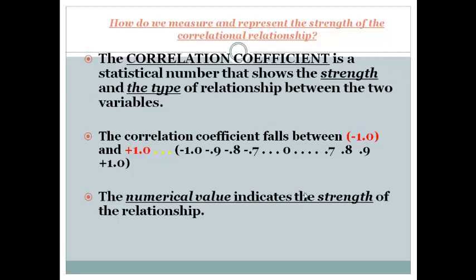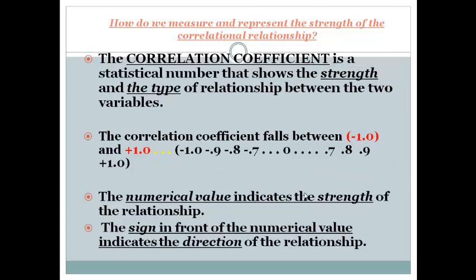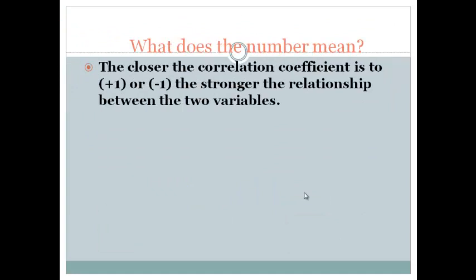The number indicates the strength of the relationship, and this is very important. You'll be tested on this. The sign in front of the number indicates the direction of the relationship. Is it a positive or negative sign? And that's the only thing you can have. You can have a positive correlation, you can have a negative correlation, and you could have zero correlation. What does the number mean? The closer the correlation number is to the extremes, either 1 or negative 1, the stronger the relationship. You could also say the closer the number is to 0, the weaker the relationship. So a negative 0.85 correlation is actually a stronger relationship than a positive 0.51 correlation. Notice that the sign in front of the number doesn't indicate strength. The number itself indicates strength. Closer to 1 or negative 1, the stronger the relationship is.